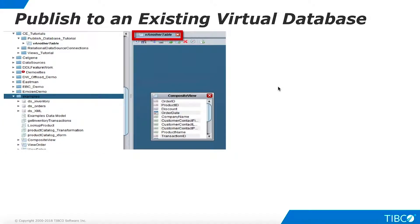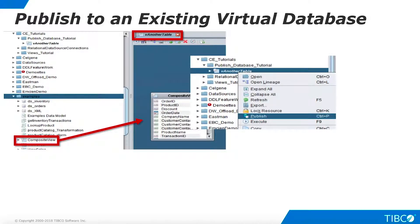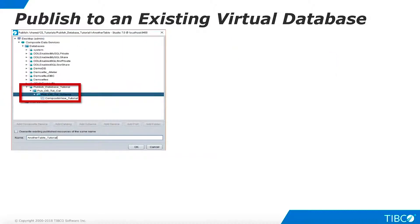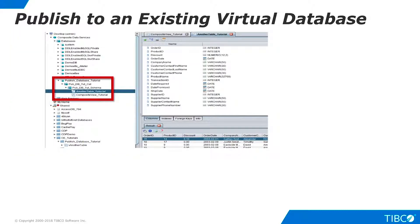Let's publish a second view to show how to add a view to an existing virtual database. Create a new view in a folder of your choice — we'll use the composite view as our example, but you can use any resource you like. Drag it onto the canvas and define the projection as you would for any view. Right-click the new view and select Publish. Instead of creating a new virtual database, simply select the schema we created earlier. Optionally, change the name for the published view and click OK. The new view is added to the virtual database and you can open it and examine it just as before.